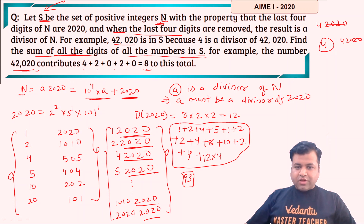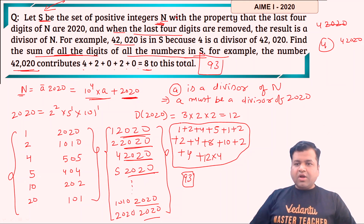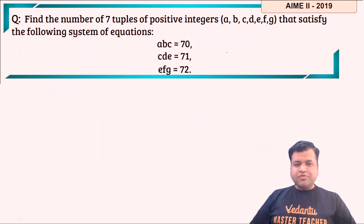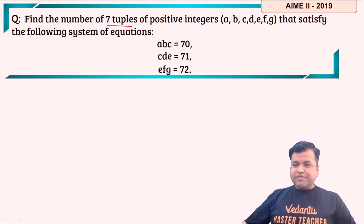The sum of all the digits of all the numbers in S is 93. Let's move to the next question. The question says: find the number of 7-tuples of positive integers A, B, C, D, E, F, G that satisfy the following system of equations: A·B·C = 70, C·D·E = 71, E·F·G = 72.